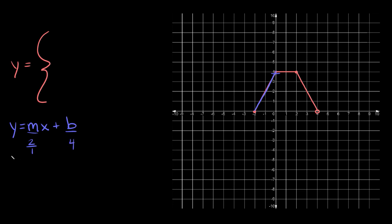So if we plug those numbers in, we get that y is equal to — and two over one simplifies down to just two — so we can write this as 2x plus 4. That's the equation of this line: y equals 2x plus 4.